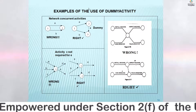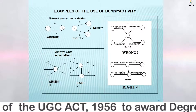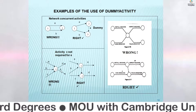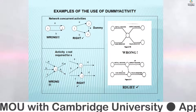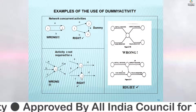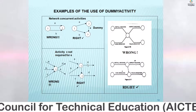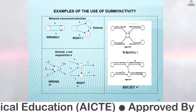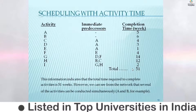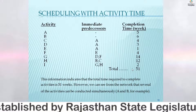Two important rules for dummy activities: First, two activities cannot be connected with the same tail event and head event in parallel — we must use a dummy activity to differentiate them. Second, if an activity is not actually a predecessor of another, we cannot show it as such — we use a dummy activity to clarify that only D is the successor of C, not E. This gives the correct logical presentation of the network.